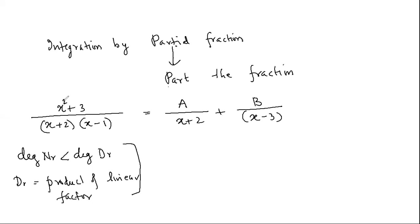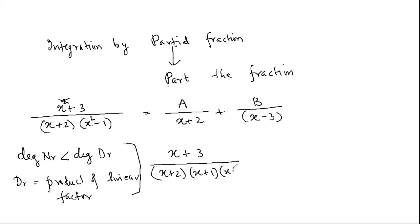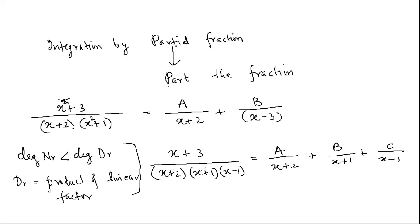Suppose there is a square in the numerator — that is not possible to split directly. But if there is a square in the denominator, it is possible if you can factorize it. For example, (x + 2)(x + 1)(x − 1) — then split into three parts with constants A, B, C. But if the denominator cannot be factorized into linear factors, then partial fraction cannot be applied.